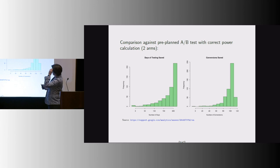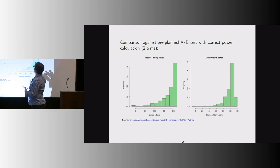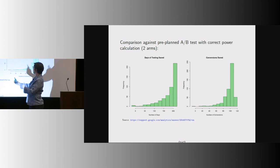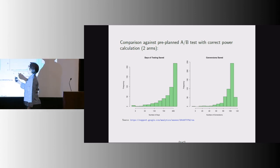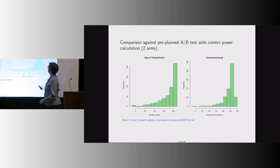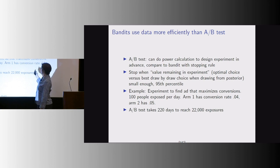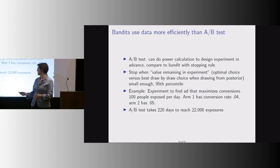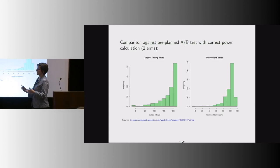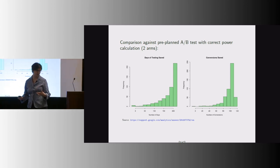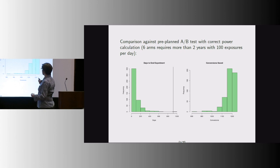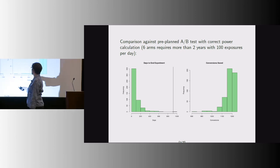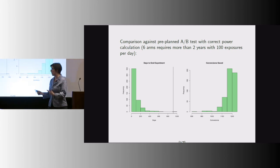Bandits use data more efficiently than A/B tests. Using a Google example: if you had an A/B test with two arms, you can calculate how many days you'd save using a bandit relative to A/B testing. With 100 people exposed per day, you'd stop a lot sooner with the bandit. With two arms you don't get that many benefits, but with six, ten, or twenty arms you get huge benefits — it's sort of exponential. For example, it takes about two years to do six arms with A/B testing, but usually less than 100 days with one arm using a bandit.